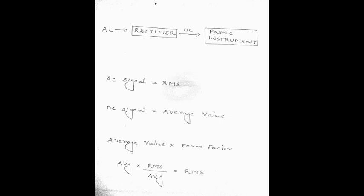We need to measure using the Rectifier type instrument. We will do the reading using the form factor in the PMMC. That is the scale — we will calibrate the scale using the form factor. We will do AC or RMS value, and we will do DC or average value. The form factor is the ratio of RMS value to the average value. This is the form factor equation.